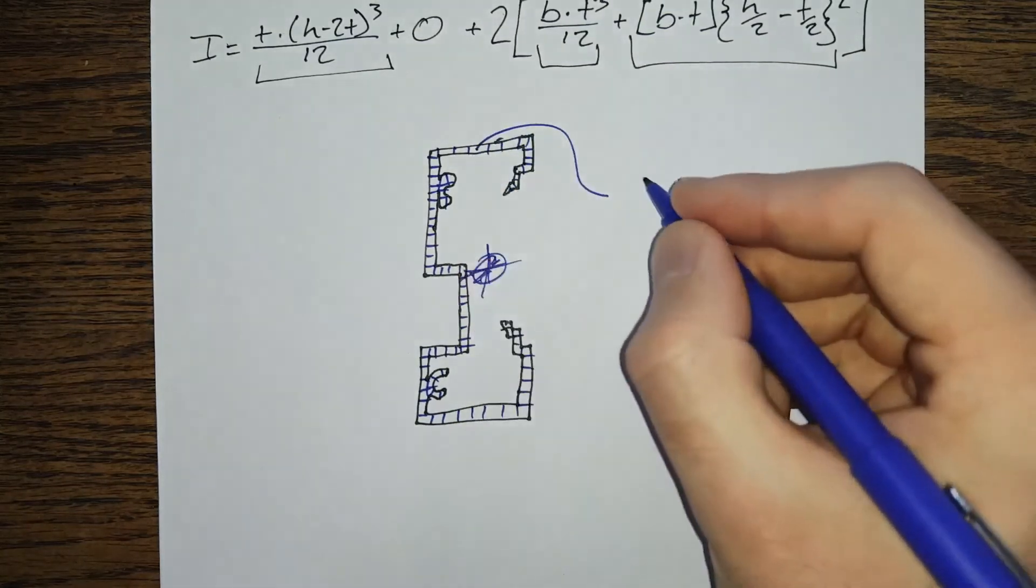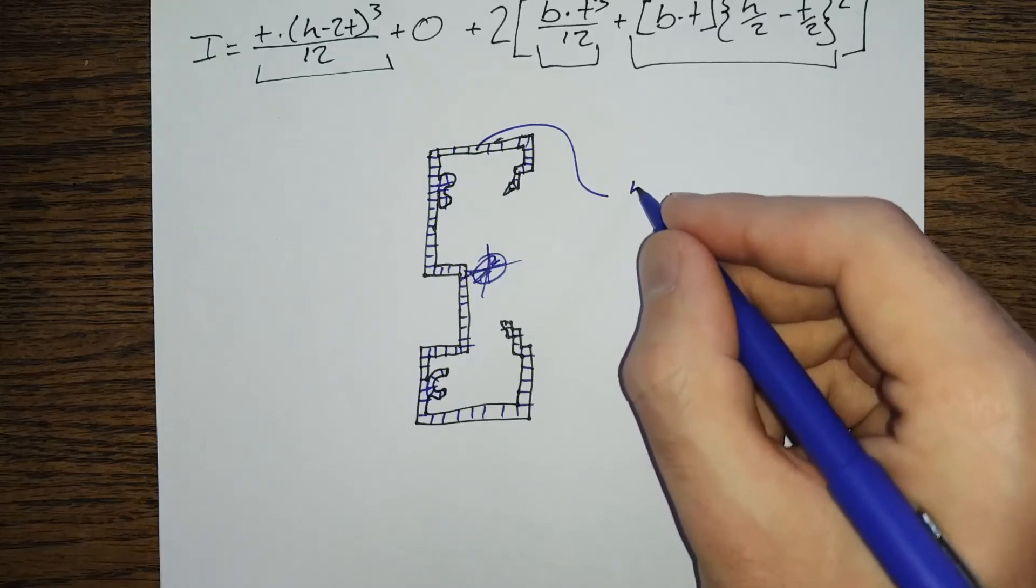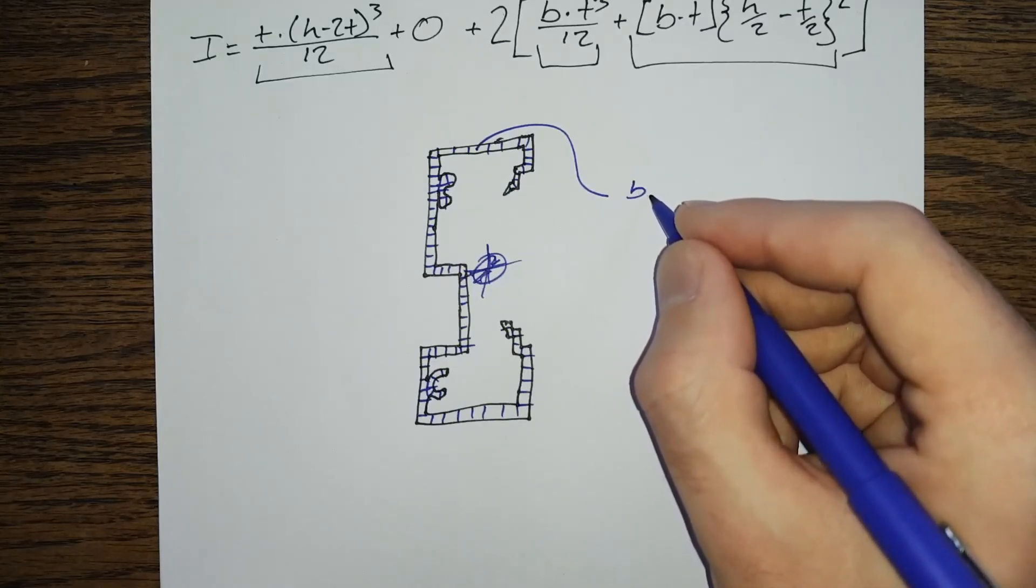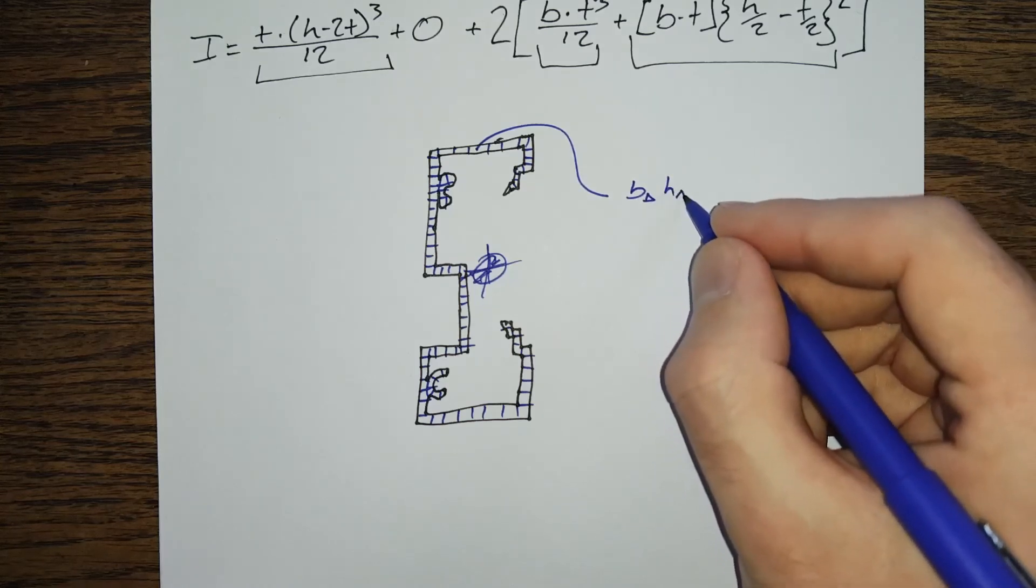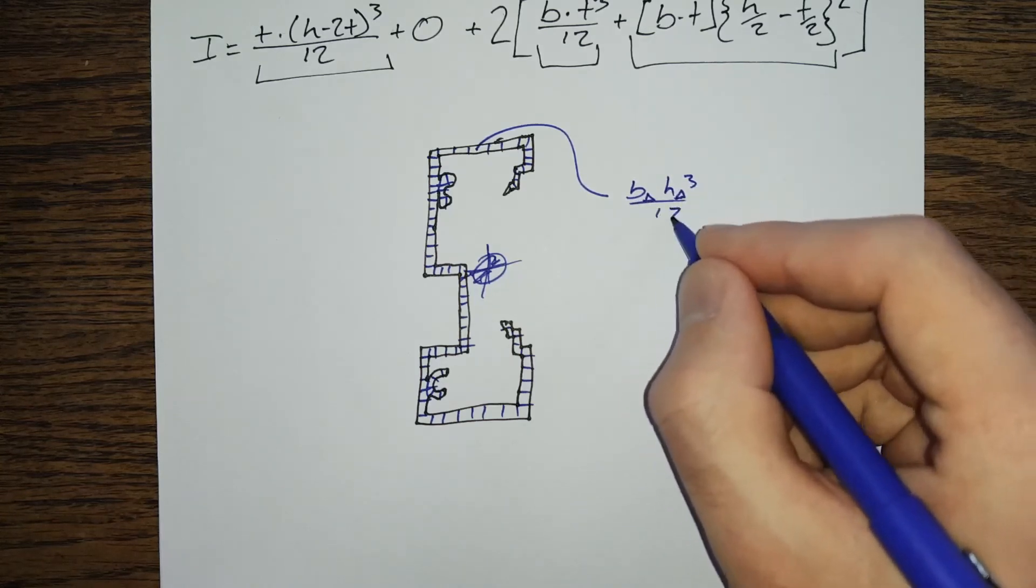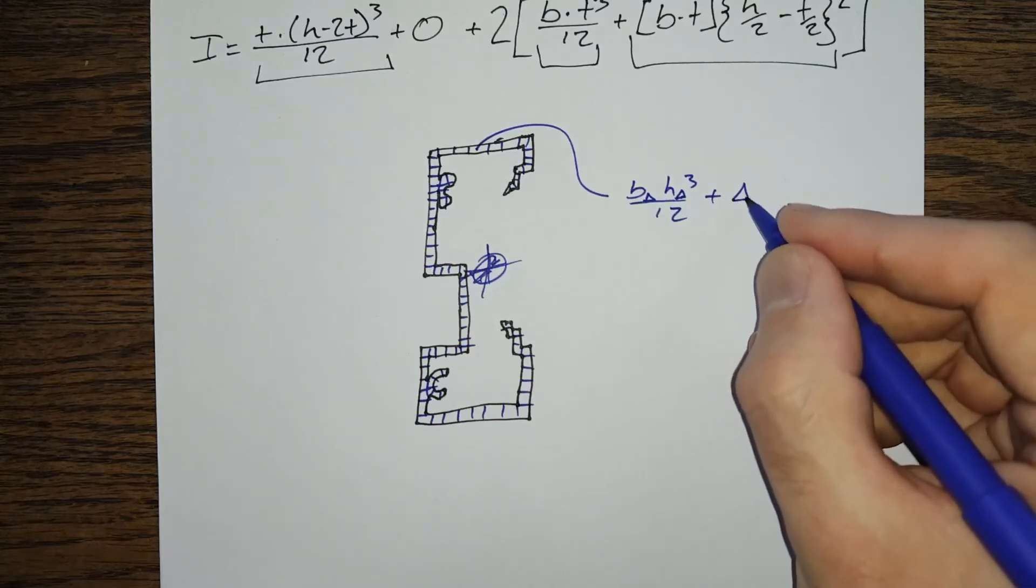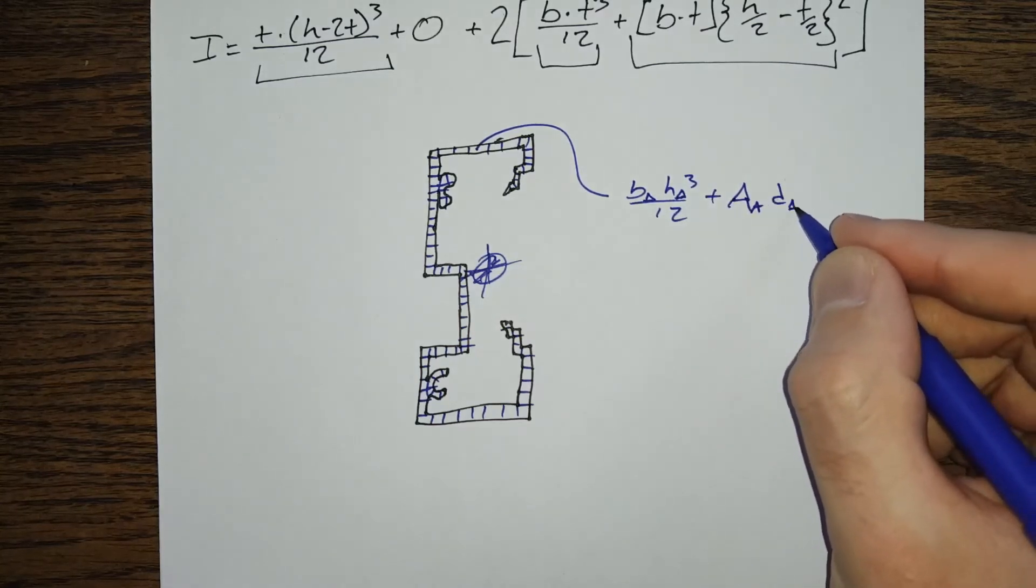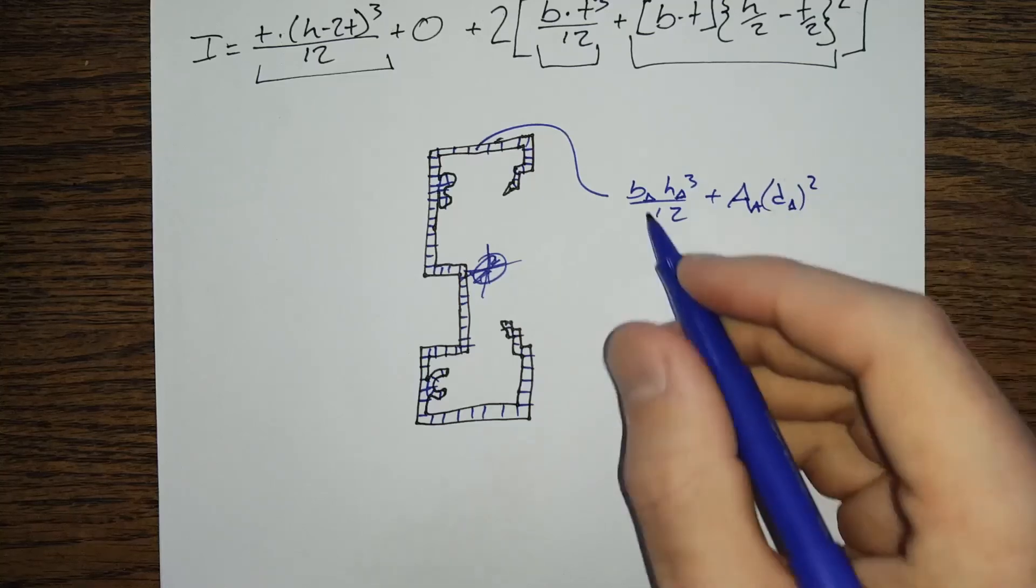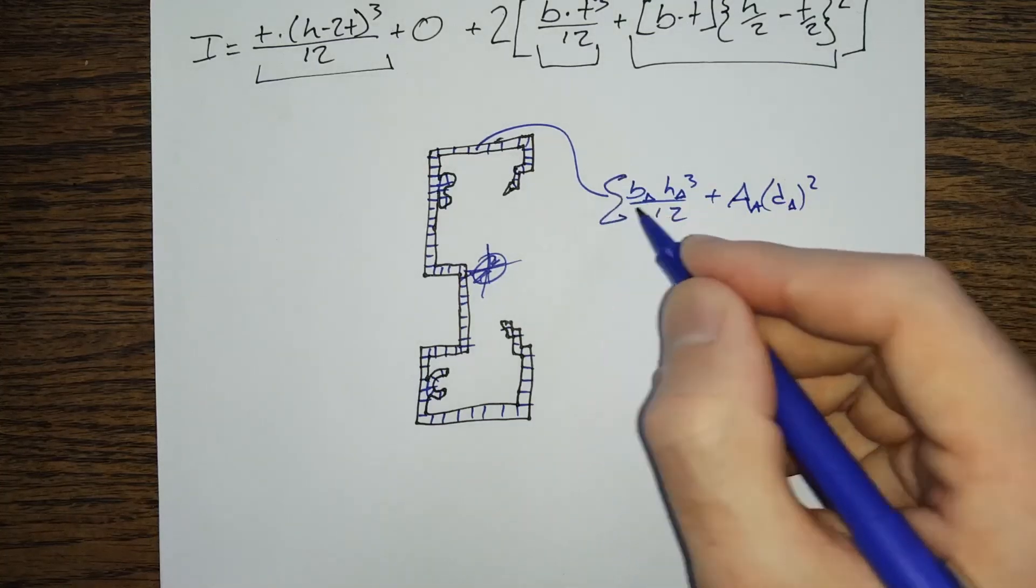And do the width delta, h delta cubed over 12 plus A delta, d delta squared, and it's going to sum them up.